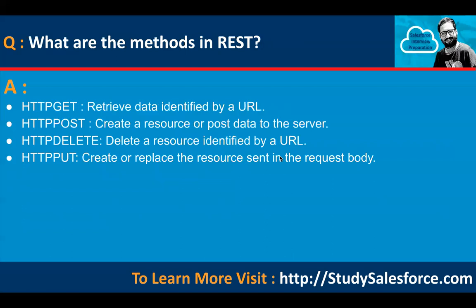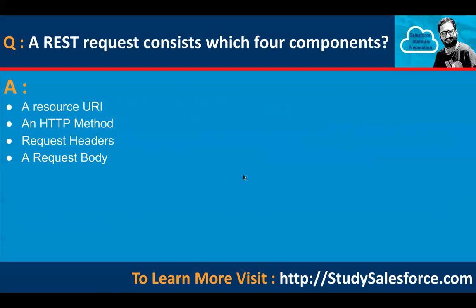What are the methods in REST? HTTP GET retrieves data identified by a URL. HTTP POST creates a resource or posts data to the server. HTTP DELETE deletes a resource identified by a URL. HTTP PUT creates or replaces the resource sent in the request body. A REST request consists of four components: a resource URI, an HTTP method, a request header, and a request body.